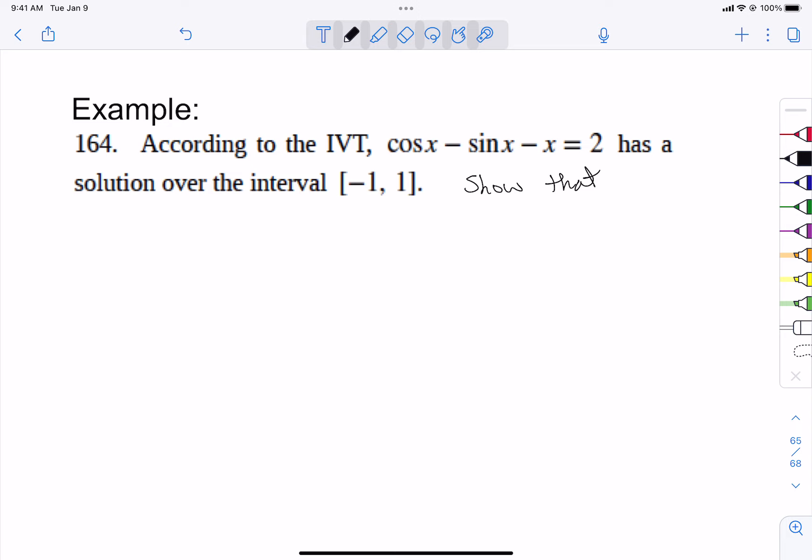So let's think about what the Intermediate Value Theorem states. It states that if we plug into a continuous function, so let's call our continuous function f(x) is the cosine of x minus the sine of x minus x. If it's continuous on the interval given, and the f(a) and the f(b) values, if there's two between them, we know the solution equal to two will be in that interval.